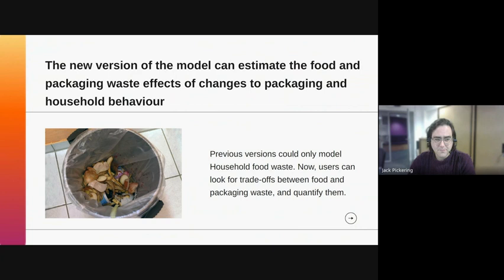The new model lets us identify and quantify trade-offs where attempts to change packaging might increase food waste and vice versa. Beyond packaging, we've included many other additions to functionality as well. This version of the model runs much more quickly. We can simulate things like portioning behavior, changes in shelf life, and the impact of storage location in the home. We can also run multiple different household types in parallel, making the model much more powerful overall.